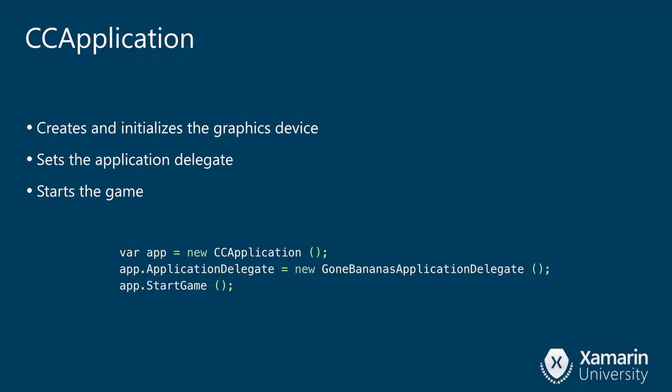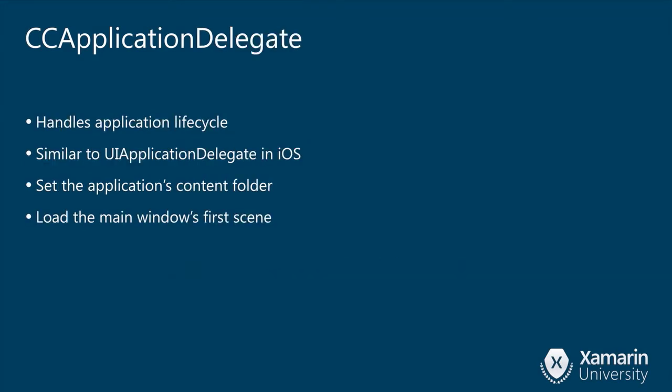The first thing you have in a CocosSharp game is a class called CCApplication. This is the non-cross-platform part — it's just a little bit of code to bootstrap the game. You create a CCApplication, assign its AppDelegate property to an instance of an app delegate, and then start the game. This code would go in the iOS application, and you'd have similar code with one additional platform-specific line for Android, Windows, and so on. The application class itself is cross-platform, but you write this bootstrapping code in a platform-specific spot.